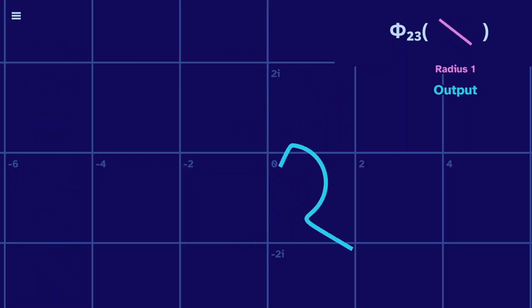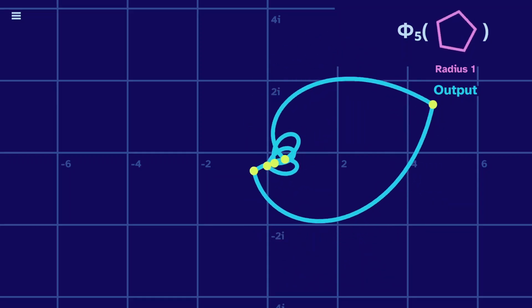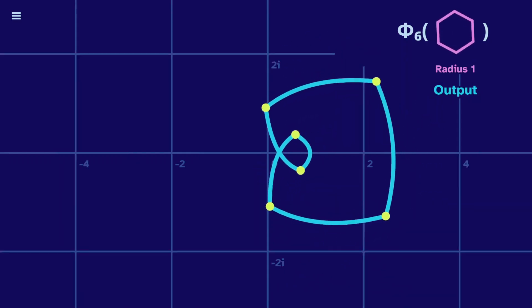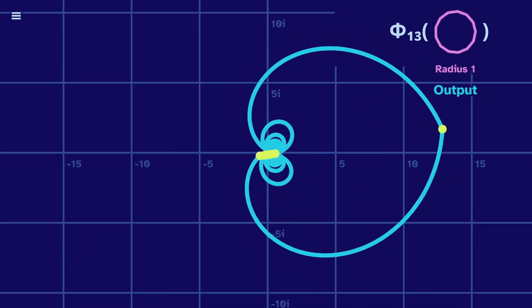I won't beat a dead horse by explaining where the cyclotomics come from. I've done that in previous videos. But I will say they relate to the corresponding shape. Such as the 5th cyclotomic and a pentagon, or the 6th cyclotomic and a hexagon, or the 13th with a 13-gon.